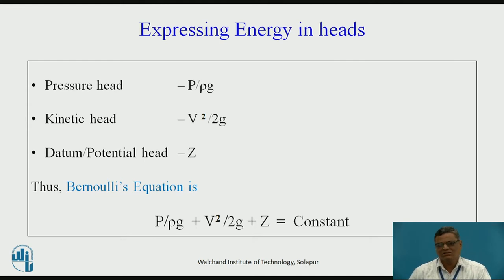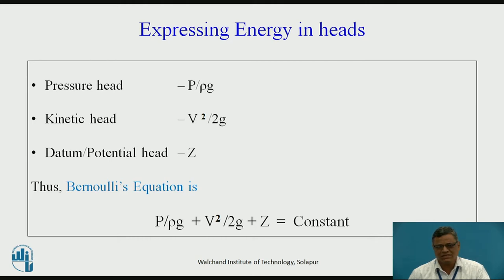Now expressing the energy in the form of heads. The pressure energy can be expressed as the pressure head using the formula p divided by ρg, where p is the pressure in Newton per meter square, ρ is the density of the fluid, and g is gravitational acceleration. The kinetic head is v² by 2g, where v is the velocity of flow. The datum or potential head is z, the height from the reference line in meters. The equation of Bernoulli's Theorem is: p/ρg + v²/2g + z = constant.